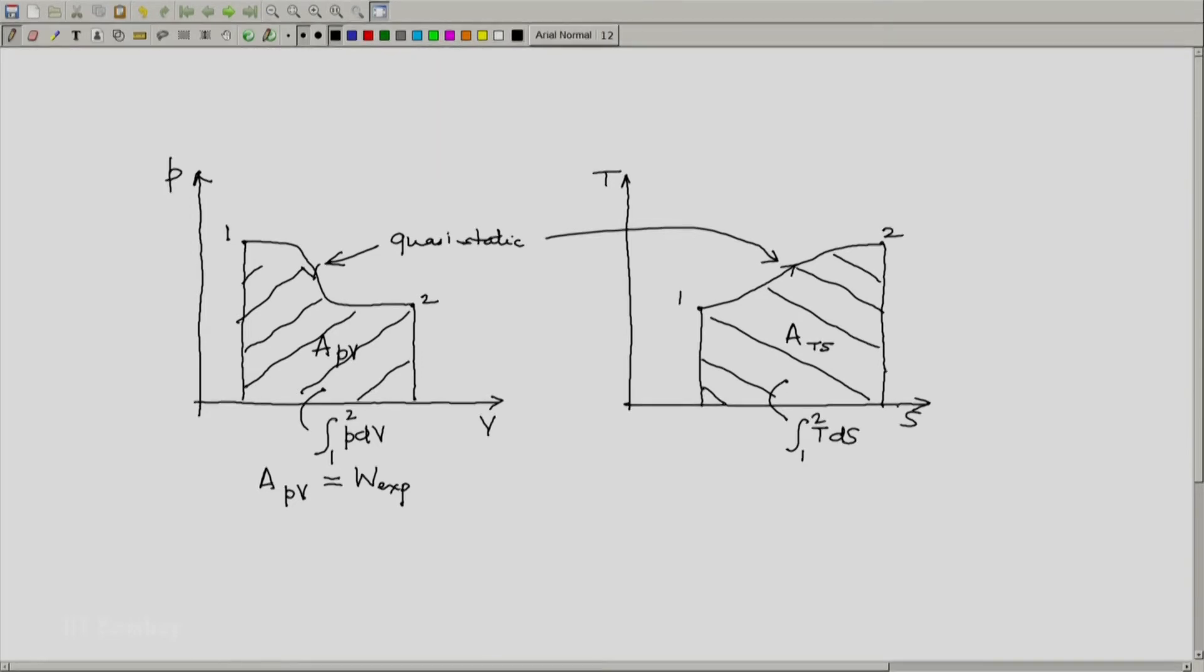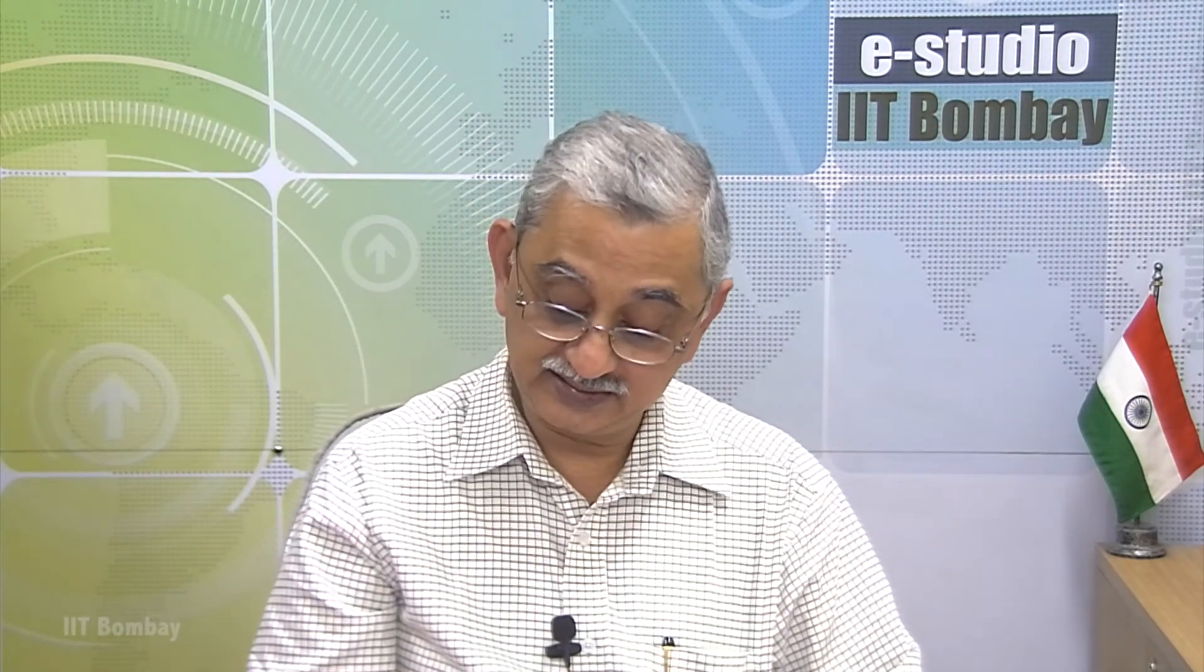What does second law say about this? Second law tells us that dS must be greater than or equal to dQ by T, and hence T dS must be greater than or equal to dQ. And hence the area under this curve ATS is greater than or equal to the heat transferred to the system during this process.